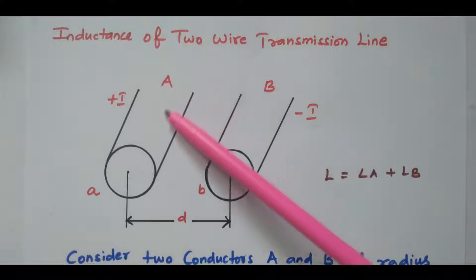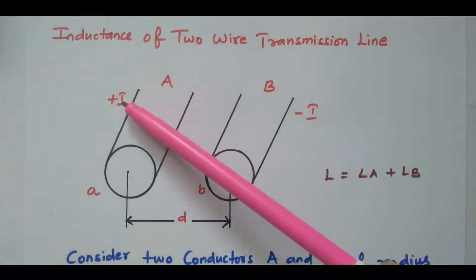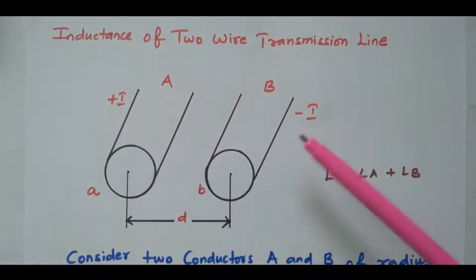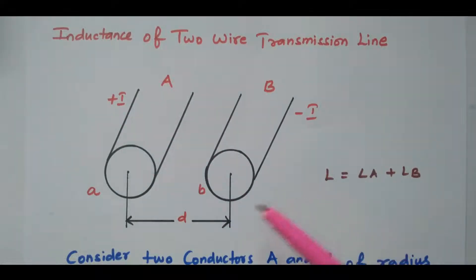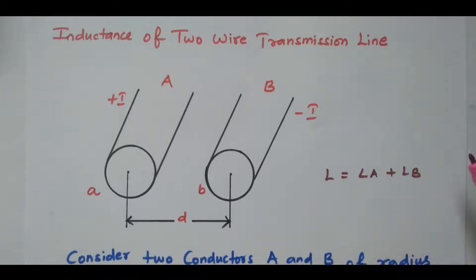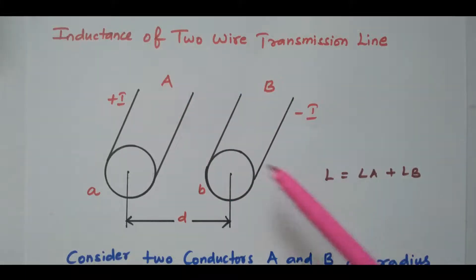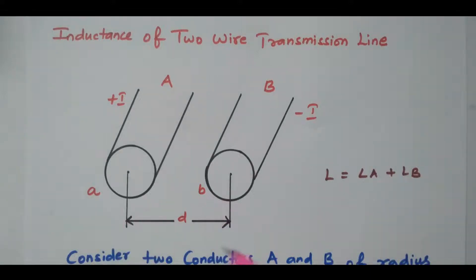Conductor A is available and this is conductor B. The current flowing in conductor A is plus I, and for conductor B it is minus I. The radius of conductor A is small a, and the radius of conductor B is small b. The center-to-center distance between the conductors is d meters. So we have two conductors A and B with currents plus I and minus I, radii small a and small b, and separation distance d meters.